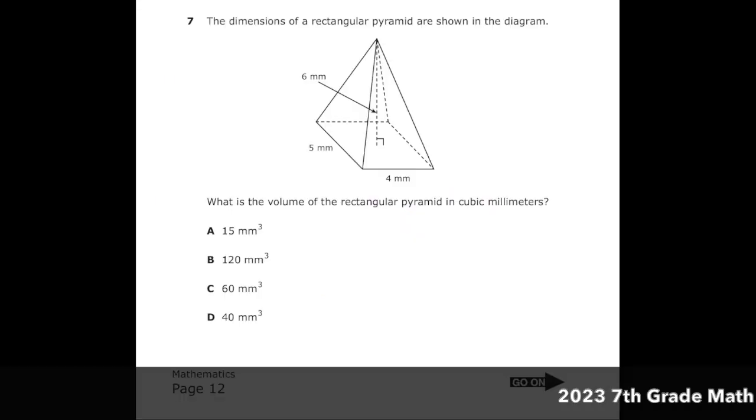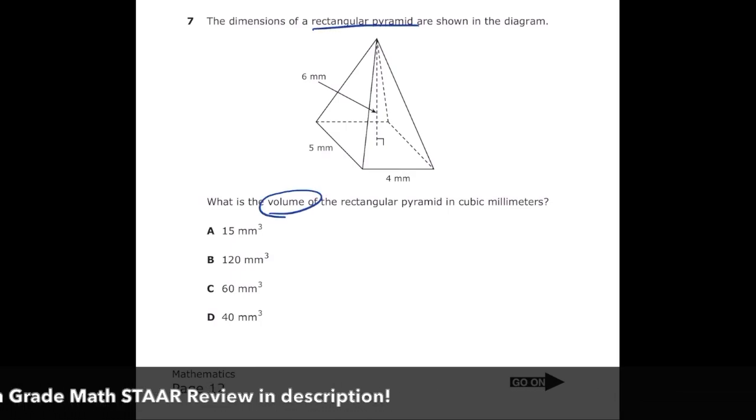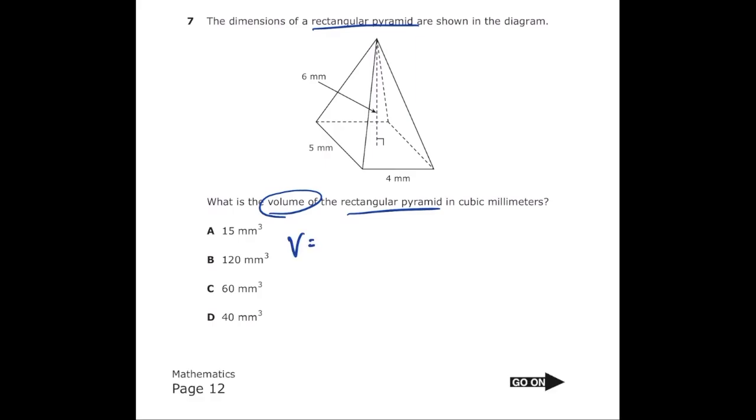This is number 7 from the 2022 6th grade math STAR test. The dimensions of a rectangular pyramid are shown in the diagram. What is the volume of the rectangular pyramid in cubic millimeters? The formula for volume of a rectangular pyramid is length times width times height, all divided by 3.